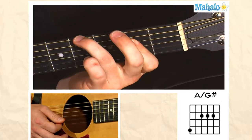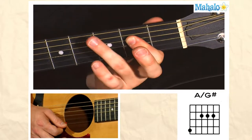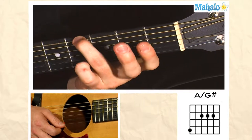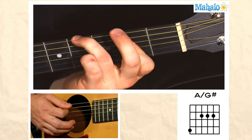So the easiest way to do that is to use a one finger A chord and put your third finger on the fourth fret on the G sharp, and this is what the chord sounds like.